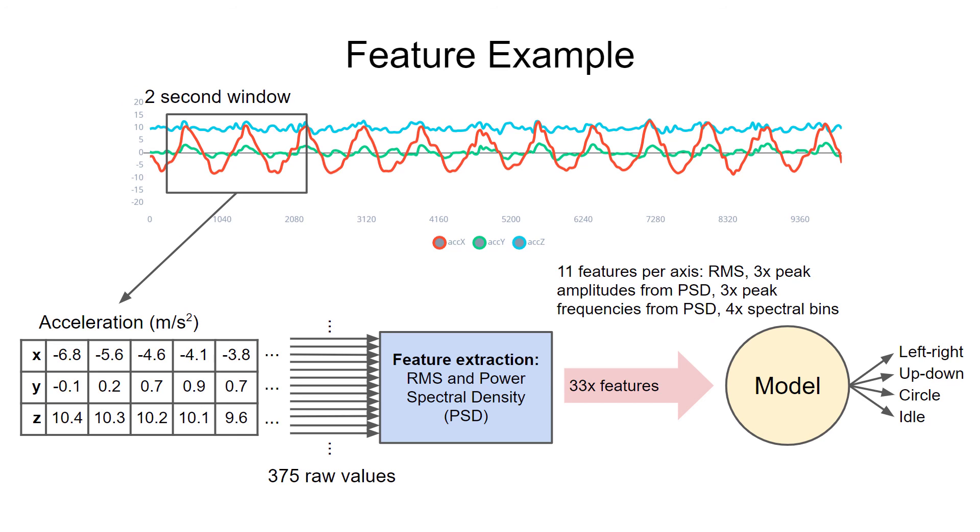In edge impulse, this defaults to an 80 millisecond increase. This gives us similar, but not quite the same raw input values. This is known as a sliding window, and it allows us to multiply the usefulness of the 10 second samples we collected.